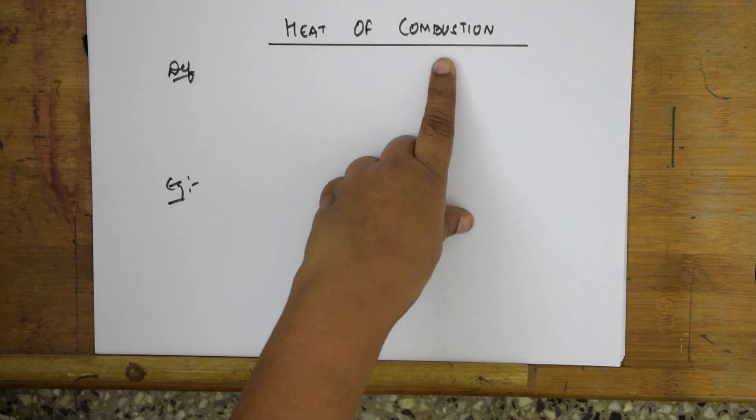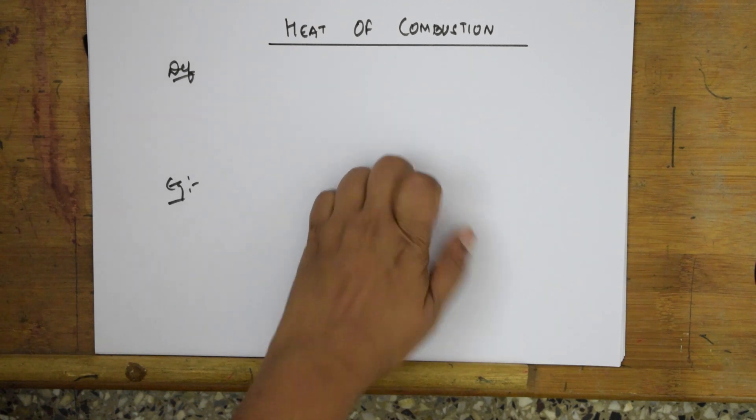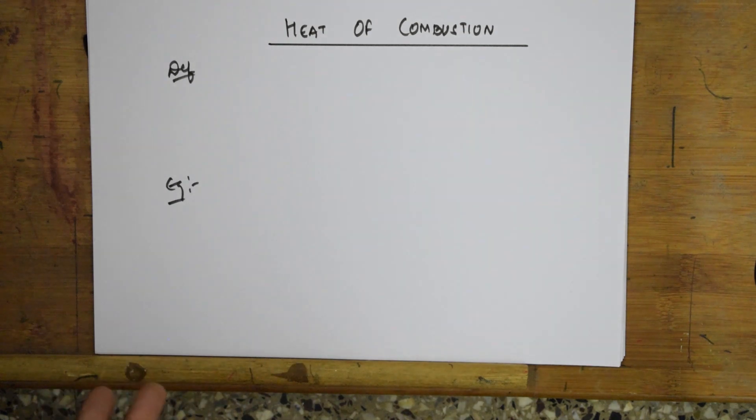Combustion is a change in Enthalpy of a system. What happens when one mole of a substance is completely burnt in excess of oxygen or air - simple. That is your combustion.